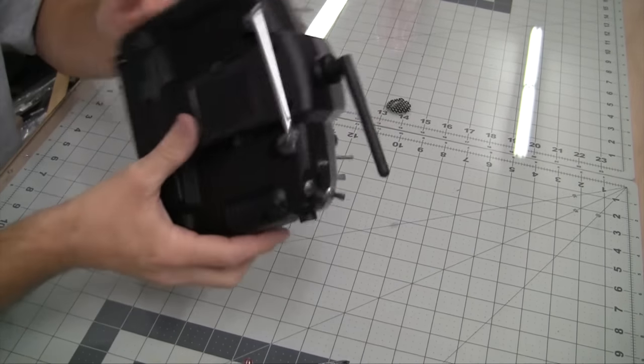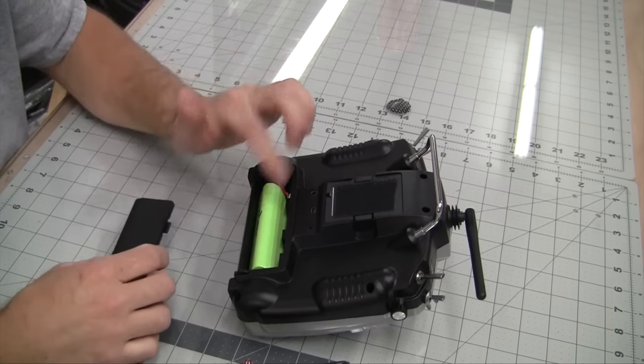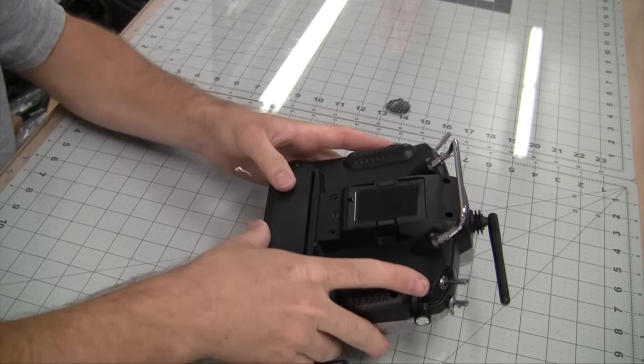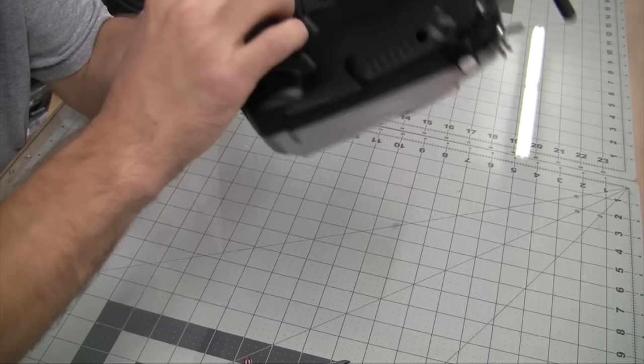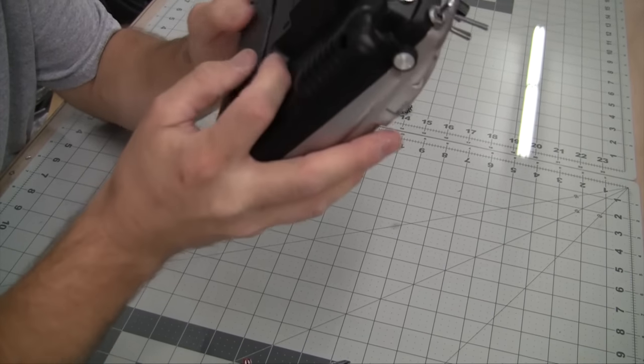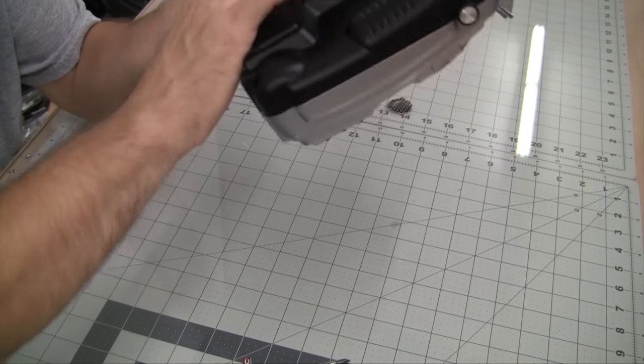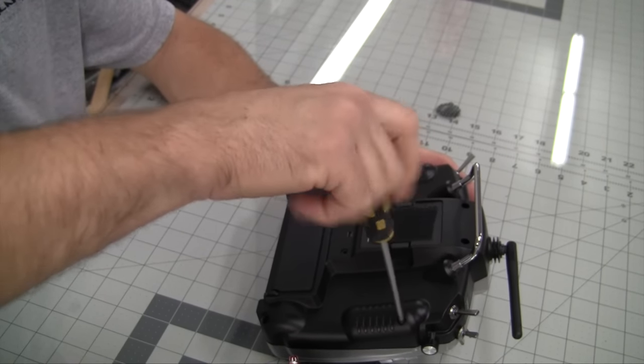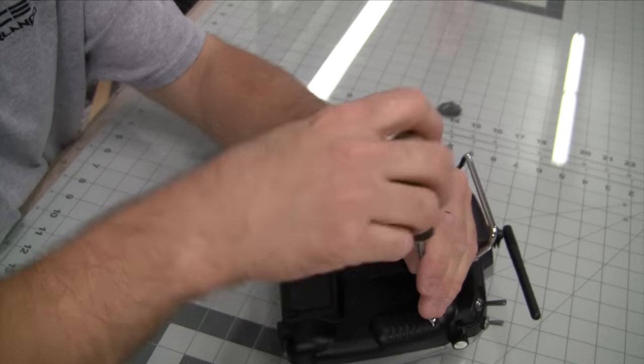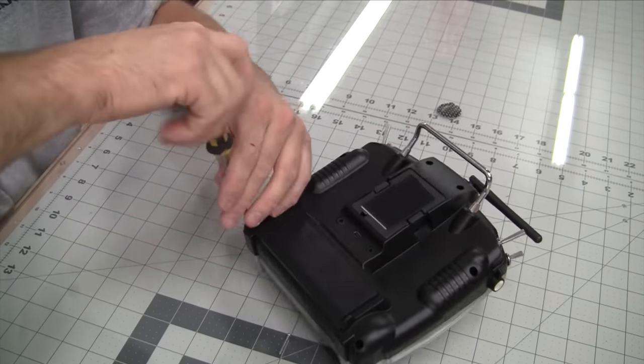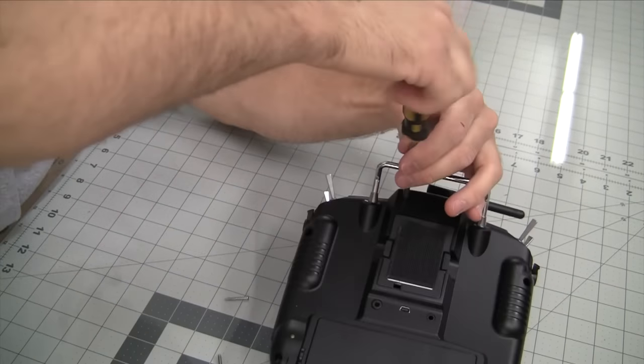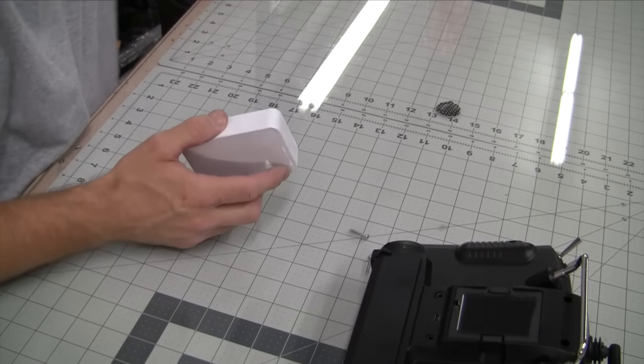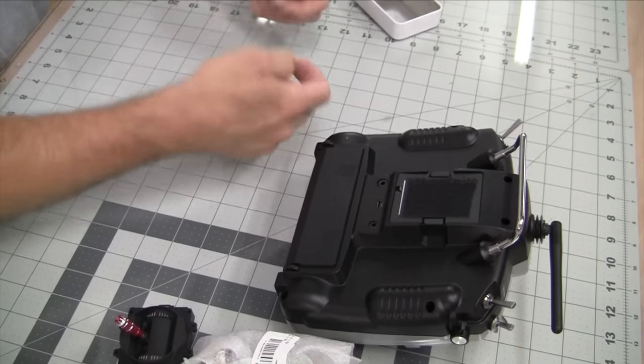All right, so first step, if you want to be safe, you can pop the battery out and the SD card, but I'm not going to waste my time. I'm not planning on shorting anything out, but it's a safer way to do things if you're worried. I don't plan on shorting anything, so we should be okay. So you take out the six screws on the back of the Taranis to start with, they're Phillips heads. I'll just keep everything in this tin so I don't lose anything.